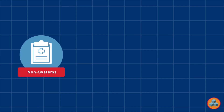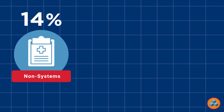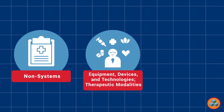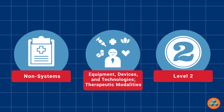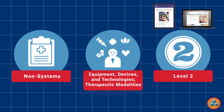This question is a non-systems question, which represents approximately 14% of all exam items. Content outline classification: this question is an Equipment, Devices, and Technologies therapeutic modalities question, which represents approximately 6% of all exam items. Level classification: this question is a level 2 question since it requires students to integrate numerous pieces of information or apply knowledge in a given clinical scenario. Remediation of level 2 questions occurs by increasing flexibility with academic content and carefully analyzing decision-making processes when answering applied examination questions.